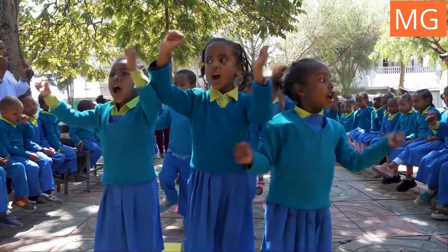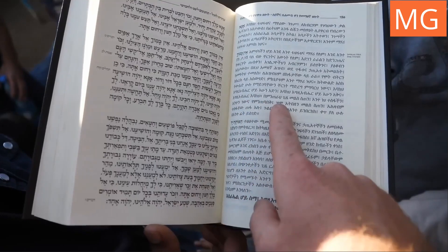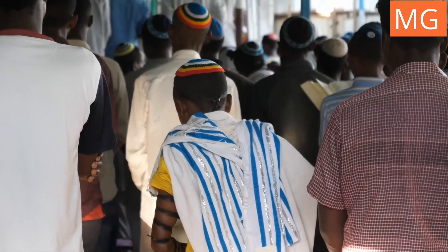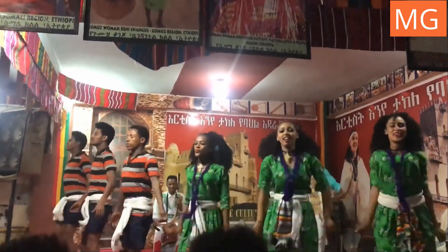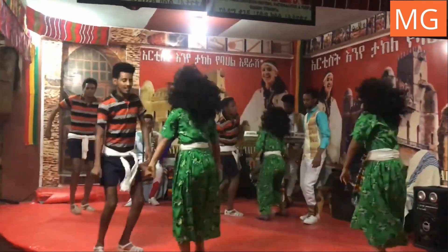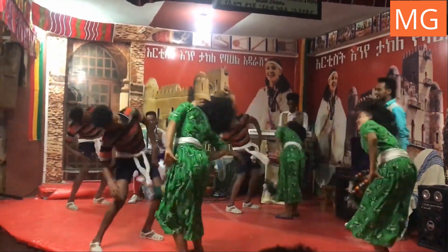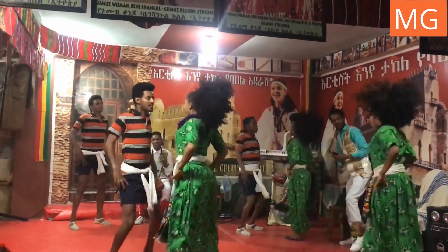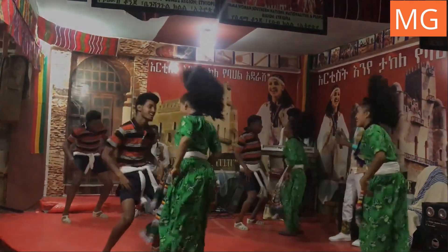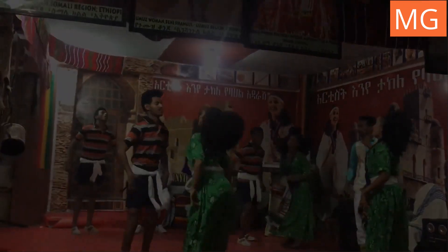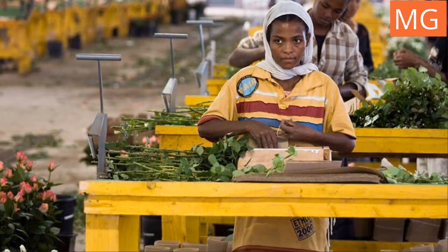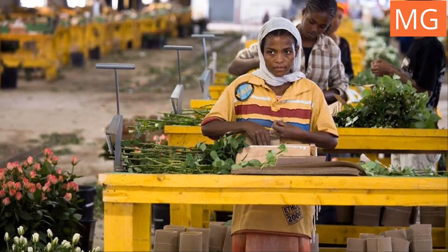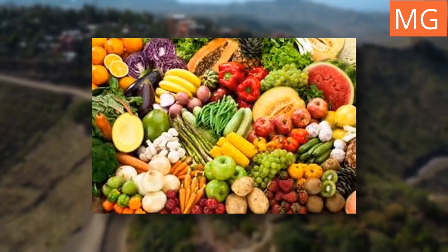Music holds a special place in Ethiopian culture, from traditional melodies to iconic Ethio-jazz fusion. Ethiopian athletes like Haile Gebrselassie have achieved global fame. Ethiopia's landscapes are breathtaking, from the rugged mountains of Simien and Bale National Parks to the otherworldly Danakil Depression. Its wildlife includes the Ethiopian wolf, Gelada baboon, and rare Walia ibex, while birdwatchers delight in endemic species. Historical and cultural attractions abound, such as the rock-hewn churches of Lalibela and the ancient ruins of Aksum. The majestic Blue Nile Falls mesmerize with their power and beauty.